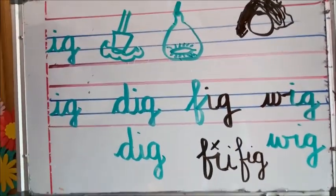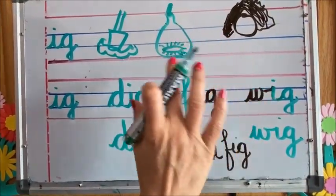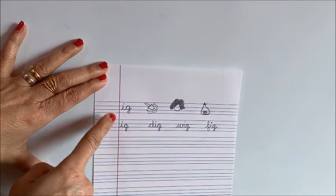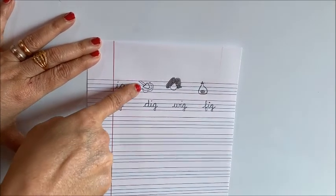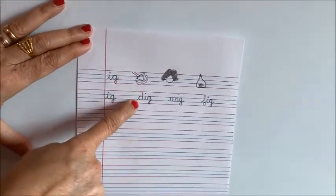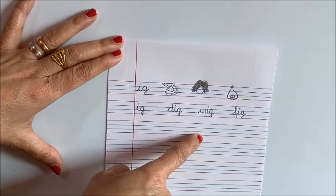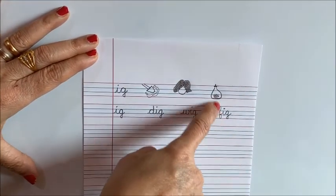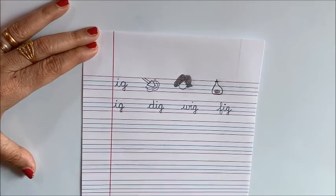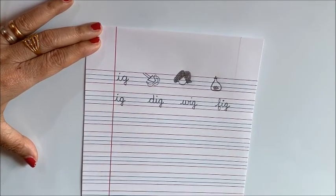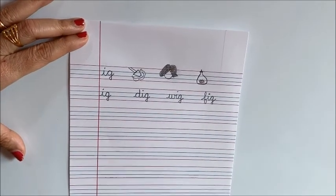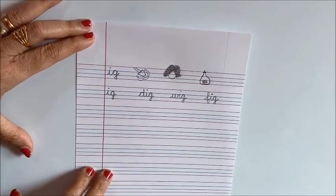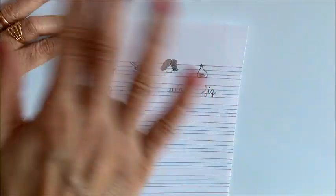I hope you understood this class. In your four-line practice book, write IG, draw a simple picture of dig as I taught you, draw wig — only the hair, no eyes needed — and draw the fruit fig. I hope you had a nice class and enjoyed. Take care and stay safe. Bye-bye, see you.